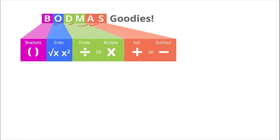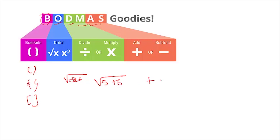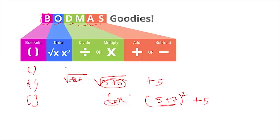So, BODMAS: B stands for Bracket — that is this bracket, this curly bracket, and this square bracket. O means Order — if some equation is inside, you need to solve it first. For example, if 5 plus 2 is inside a bracket, solve that first. Similarly for squares: if 5 plus 7 squared is there, solve the square first. Also, 'of' comes under Order — for example, 4 plus 5 of 3, you calculate 5 of 3 first.